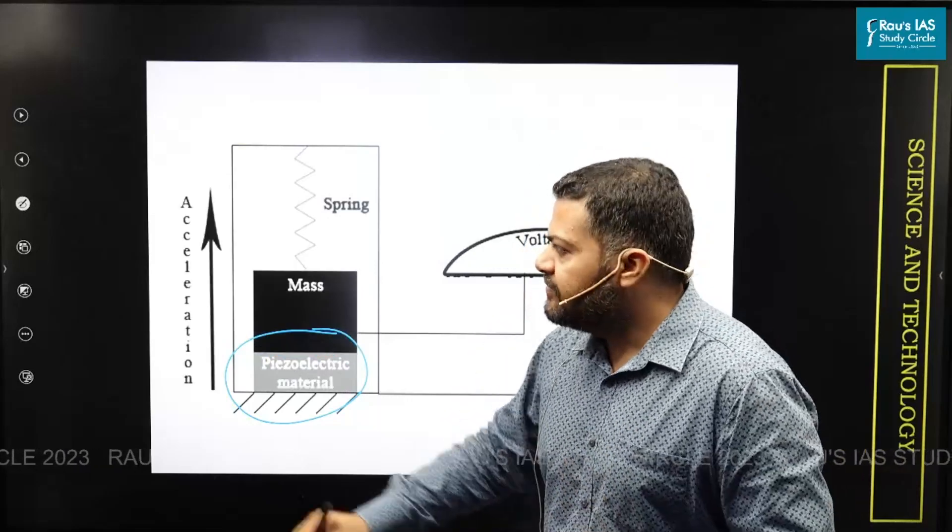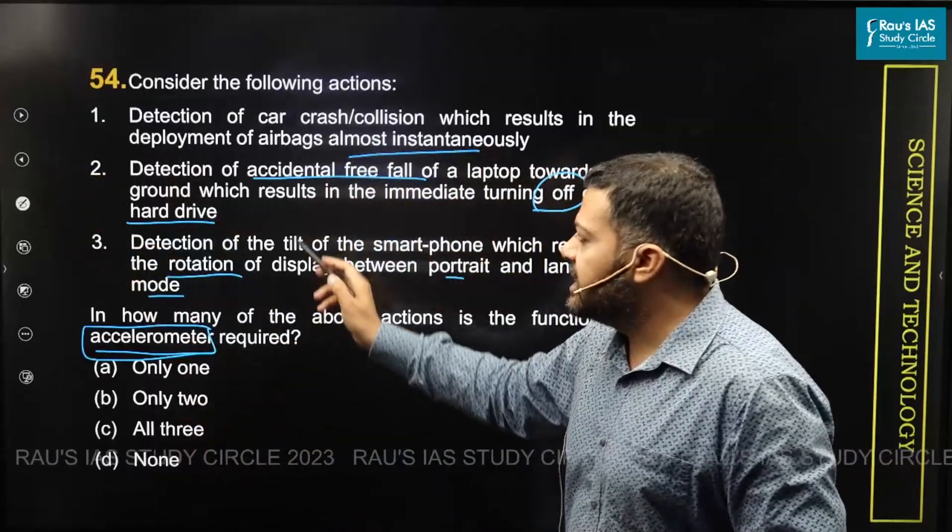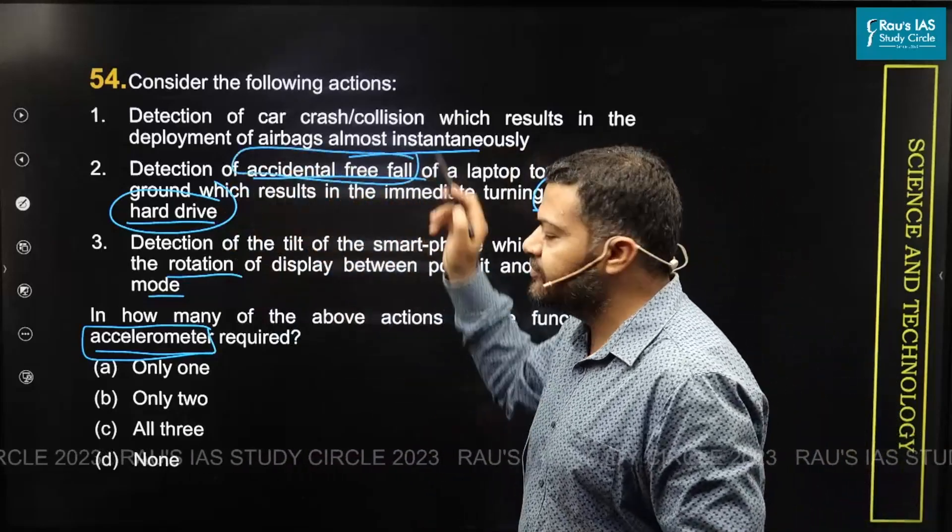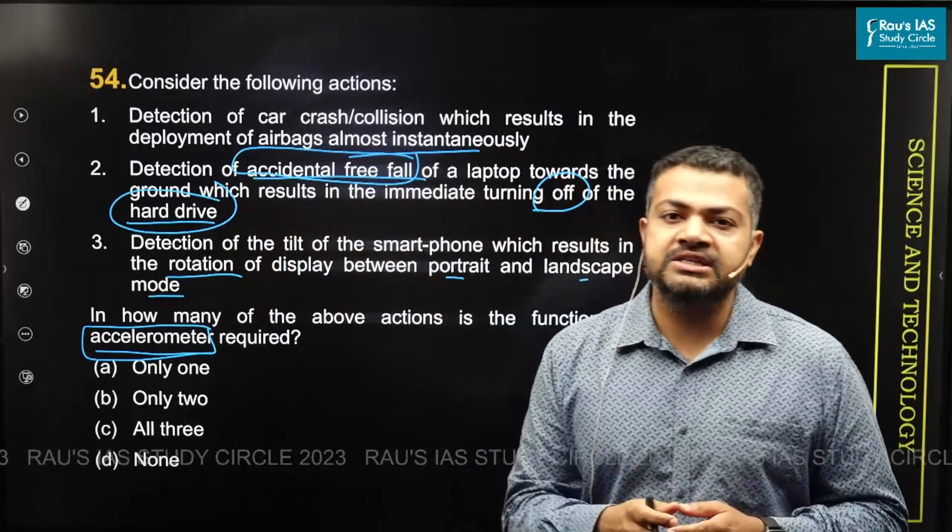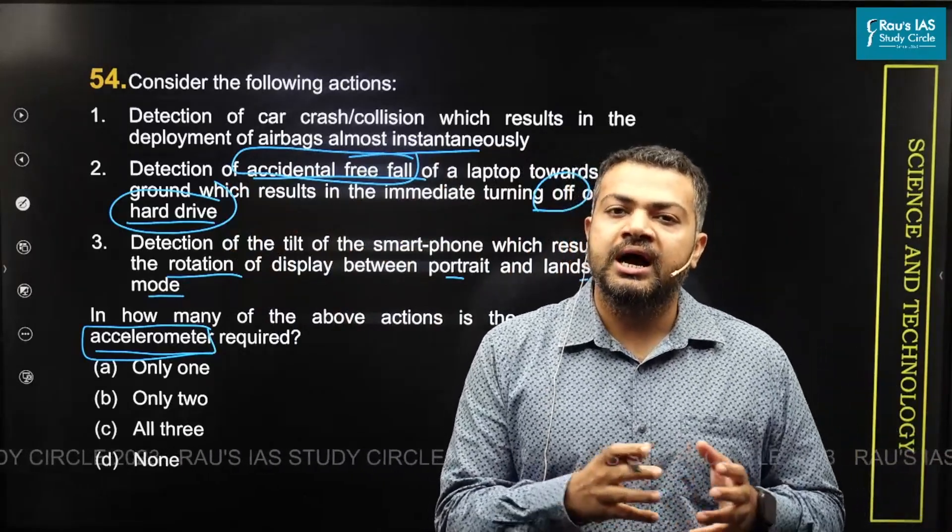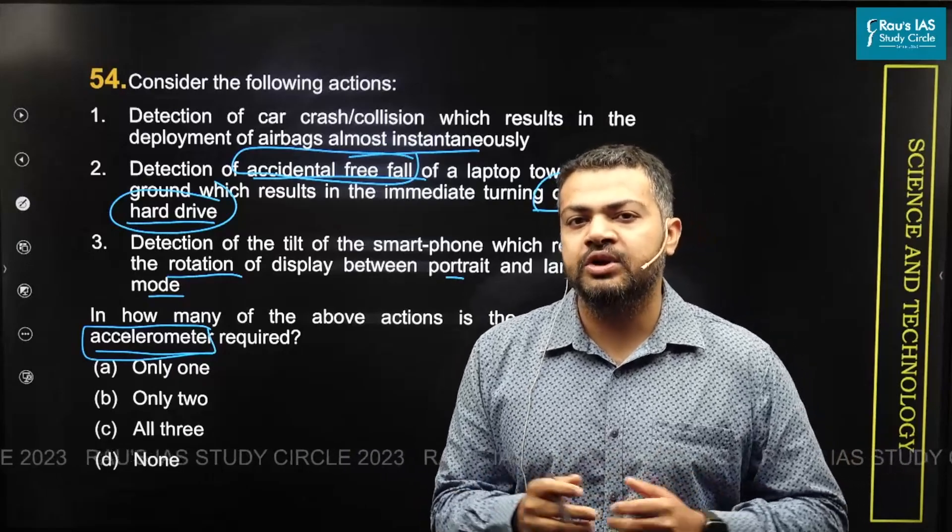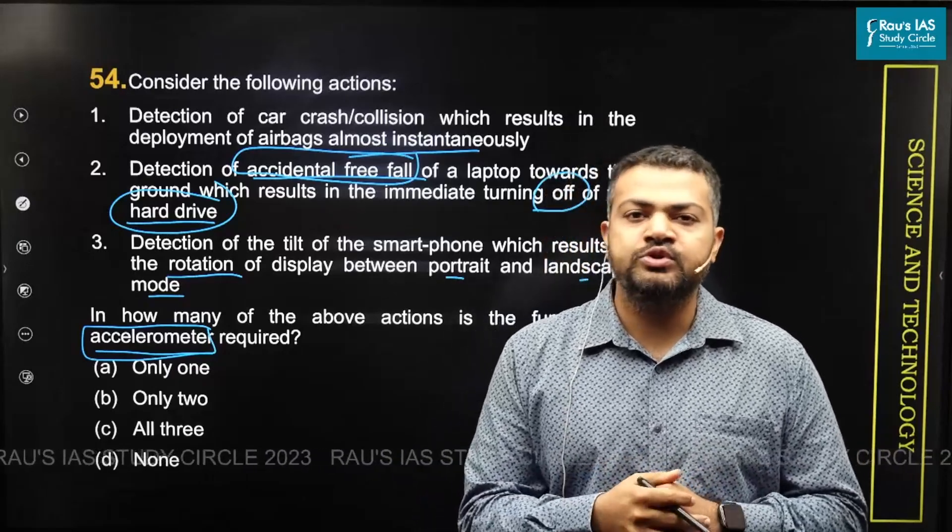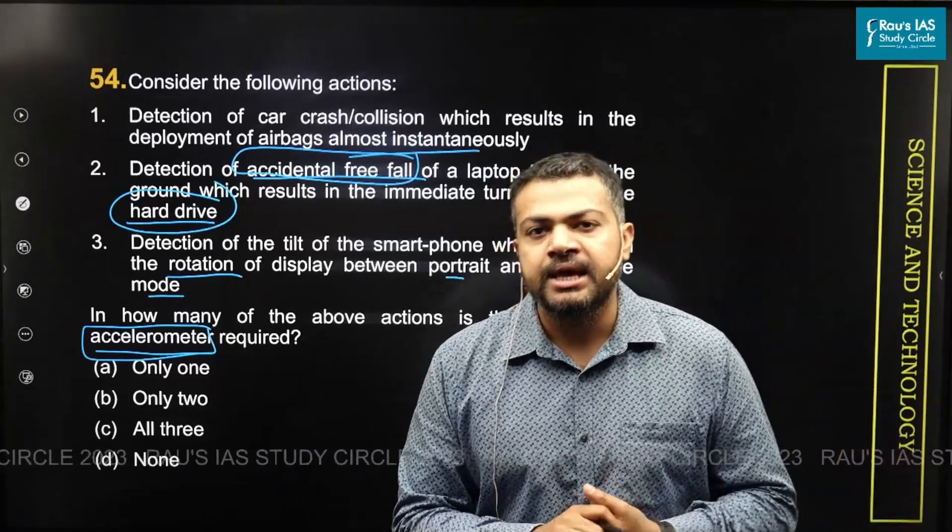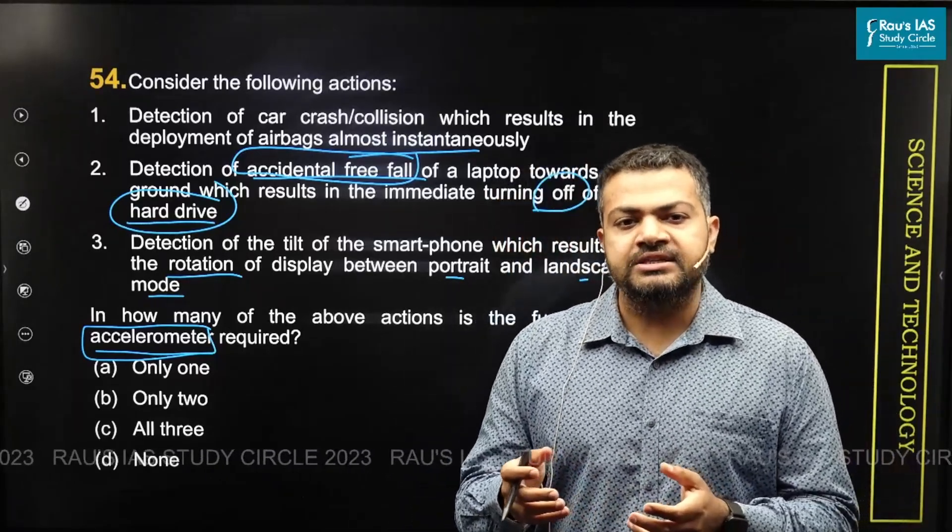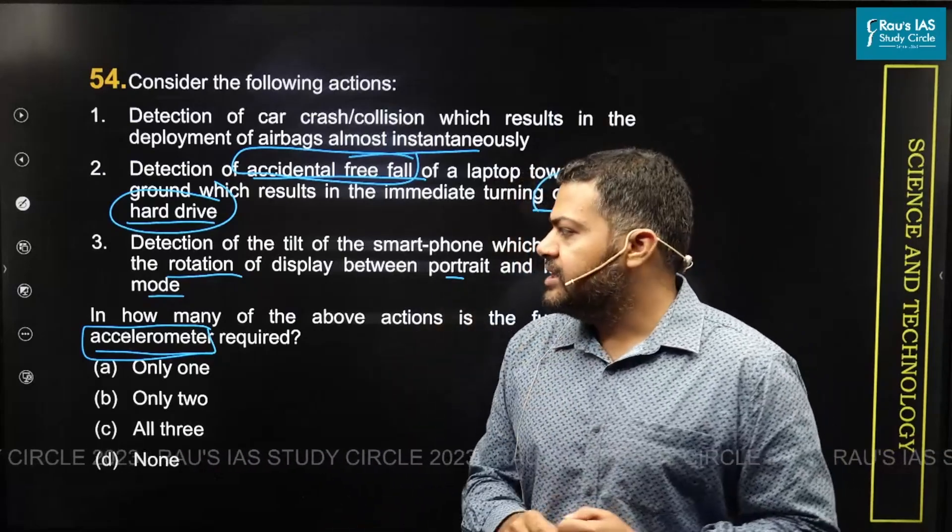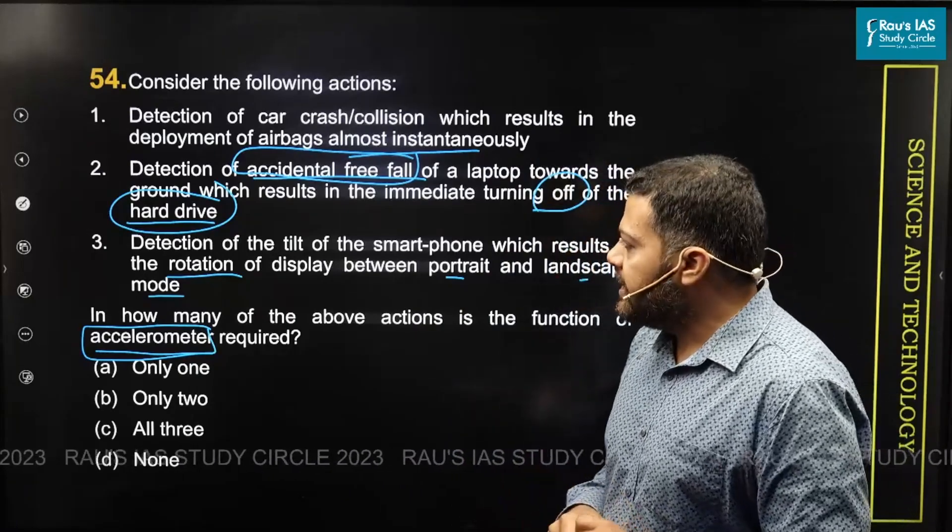In the same way, when you look at the second point, that is automatic turning off of the hard drives in laptops whenever there is an accidental freefall. This is also a feature that is found in several laptops which were supporting hard disk drive. Nowadays we have solid state drive, but hard disk drive was also quite popular few years ago. Even today, many laptops come up with this feature, where the moment an accidental freefall happens, a laptop hard drive automatically turns off, saving the entire data from getting lost.